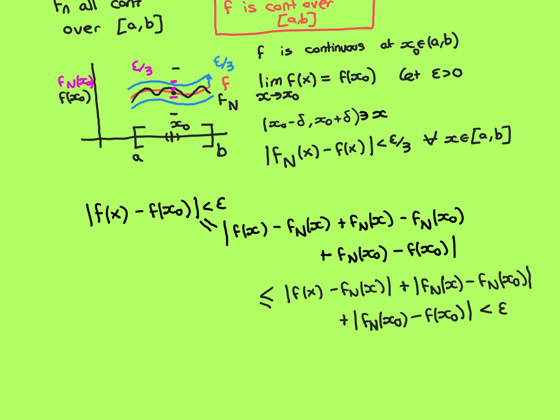And as x0 was a general point in the open interval (a, b), I can conclude that the function f — my limit function — is continuous over all of that open interval part of my domain.